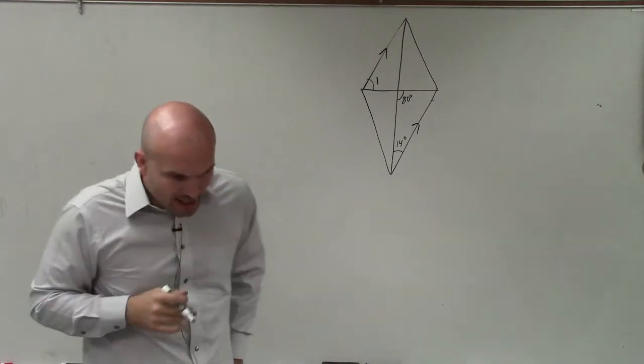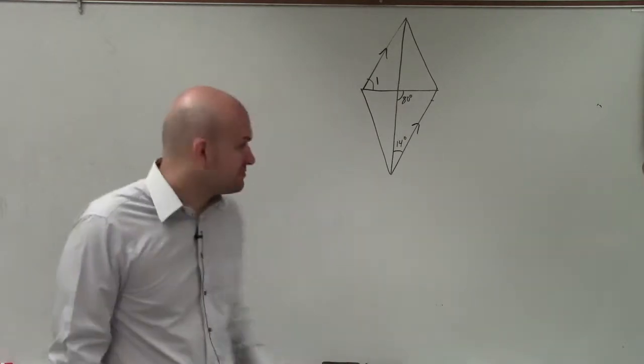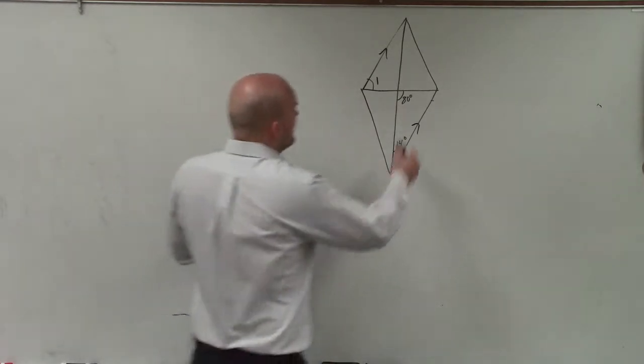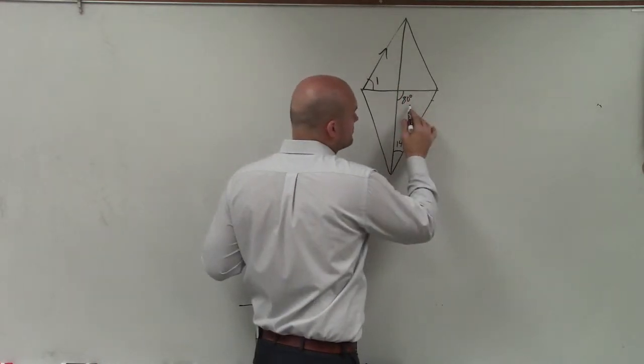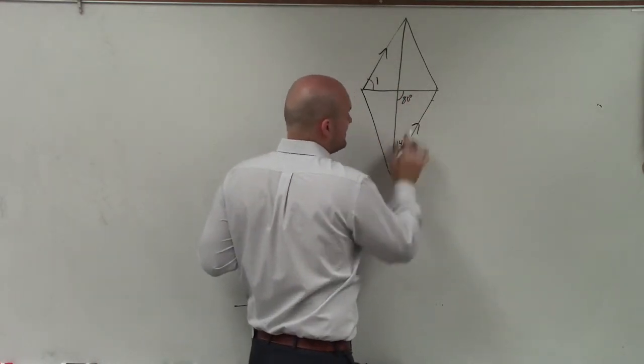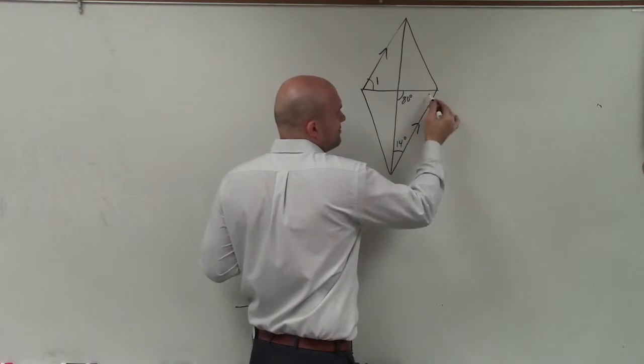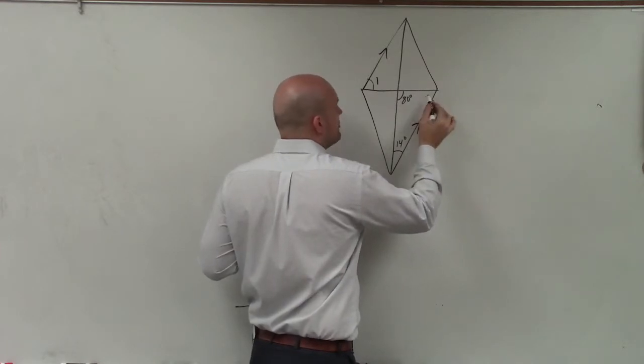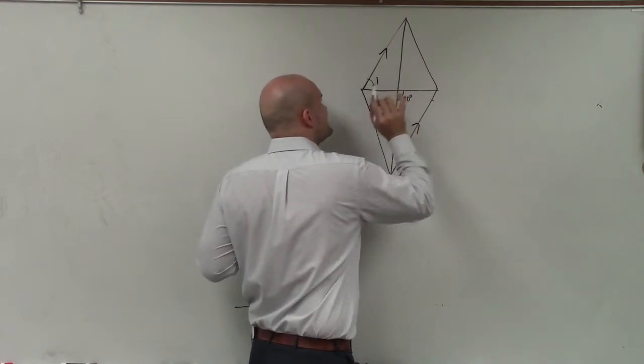Now, there's a couple different ways we can go about this type of problem. But you can see that we have a triangle, right? And we have two angles in it and we're missing the third one. We can easily figure out that angle, but they're asking us to figure out what is this angle.